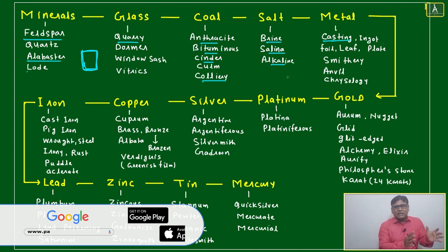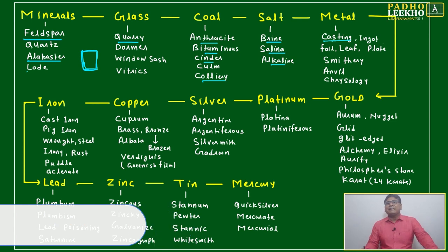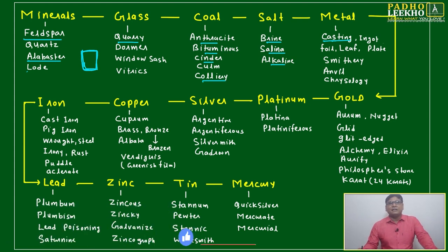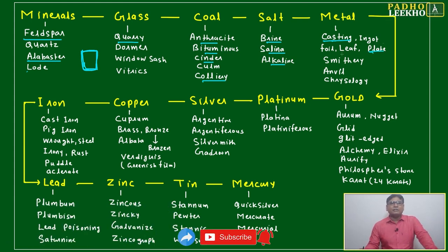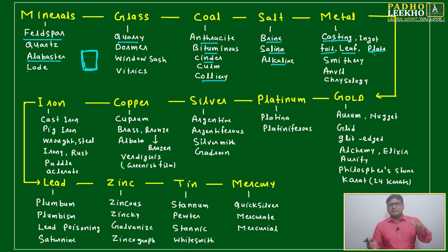After that, we have plate, foil, and leaf. Foil is very thin metal, leaf is further thick, and plate is bigger. If you are going further bigger, we can say it is a plate.